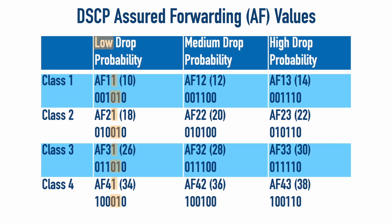But what does it mean to have a low, medium, or high drop probability? We'll need to answer that in our next video because that drop probability has to do with a feature called weighted random early detection. But consider this example: something marked with AF43 versus something marked with AF21. If we start to become congested, who gets dropped first? Many people would say AF21 gets dropped first because it has a lower priority — but actually, the IP precedence equivalent value has nothing to do with the drop probability. The drop probability is entirely dependent upon that second digit. So we would actually drop AF43 before we dropped AF21. Join me in our next video as we reveal exactly why that's so.